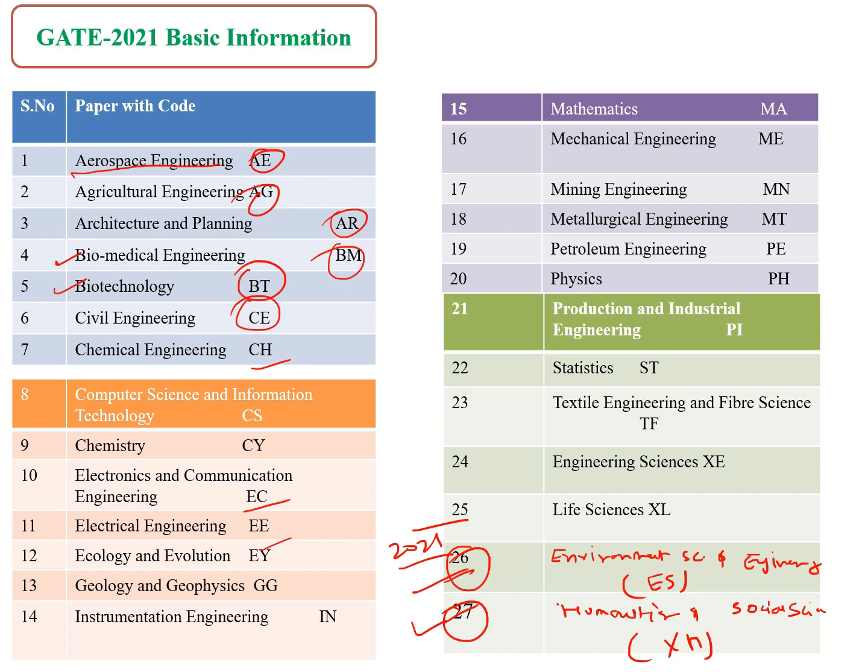Now the total number of papers in GATE is 27. In 27 disciplines we can write the GATE exams. In the 24th and 25th sections, General Science and Life Science, they have already given few options with compulsory subjects and optional subjects. For Environmental Science and Engineering students and for Humanities and Social Science students, this is very good news. We have to wait for the information brochure for eligibility criteria.